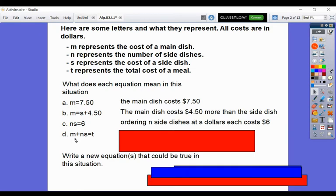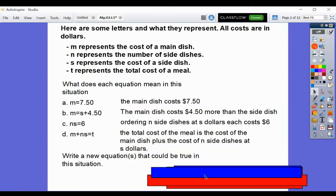The last one, M plus NS equals T. T represents our total cost of the entire meal. So our total cost of the meal is the cost of the main dish plus the cost of N side dishes at S dollars each.